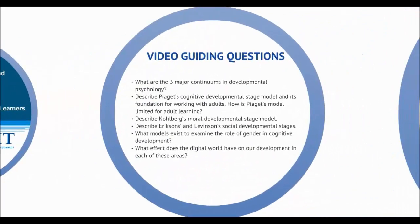Here are the guiding questions for this video. What are the three major continua in developmental psychology? Describe Piaget's cognitive developmental stage model and its foundation for working with adults, and how is Piaget's model limited for adult learning? Describe Kohlberg's moral developmental stage model and Erickson's and Levinson's social developmental stages. What models exist to examine the role of gender in cognitive development, and what effect does the digital world have on our development in each of these areas?